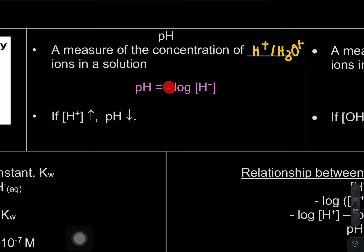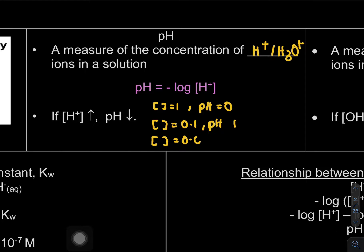For example, if concentration of H⁺ is 1, pH = -log(1) = 0. If concentration is 0.1, pH = -log(0.1) = 1. If concentration is 0.01, pH = -log(0.01) = 2.